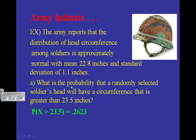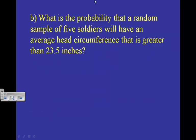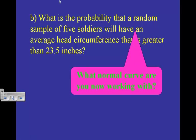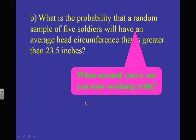Going back: our mean was 22.8 inches and standard deviation was 1.1 — that was our normal curve. Now that we have five soldiers, things change. The mean is not going to change, but the standard deviation is going to change. The normal curve we're working with now is normal with mean 22.8 and standard deviation 1.1 divided by the square root of 5.